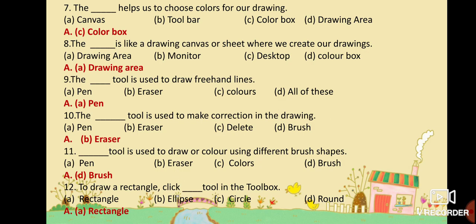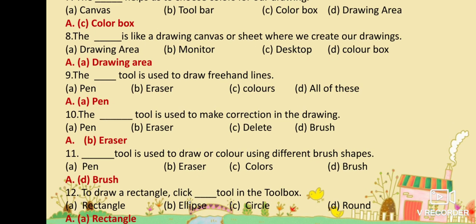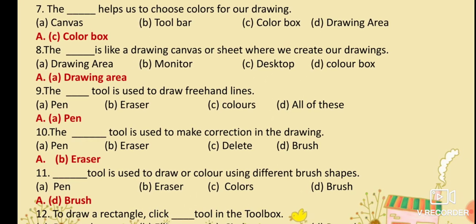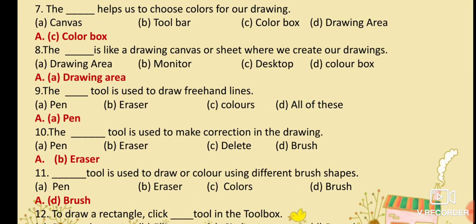MCQ No. 7: The dash helps us to choose colors for our drawing. Option A: Canvas. Option B: Toolbar. Option C: Color Box. Option D: Drawing Area. Your answer is Option C: Color Box. The color box helps us to choose colors for our drawings.